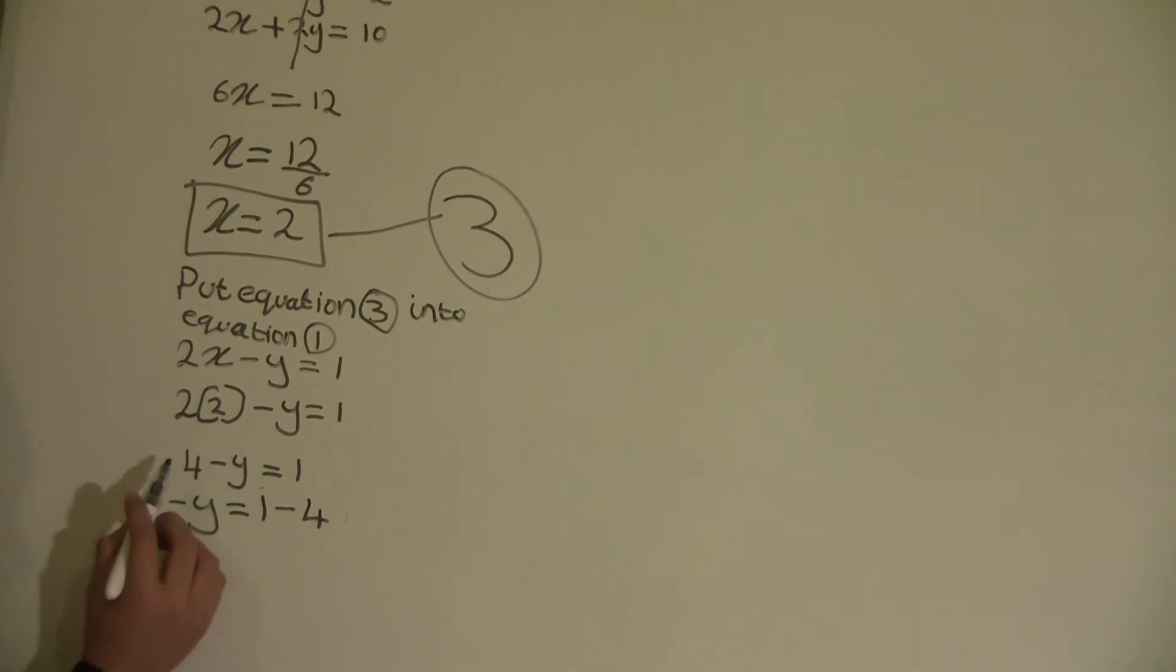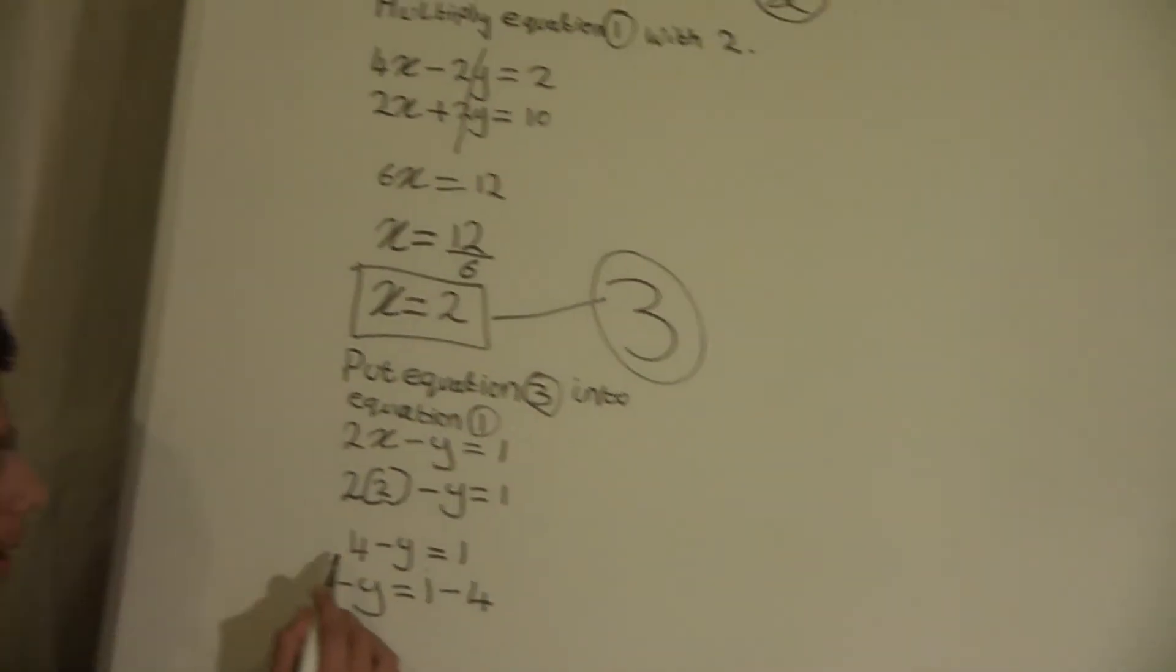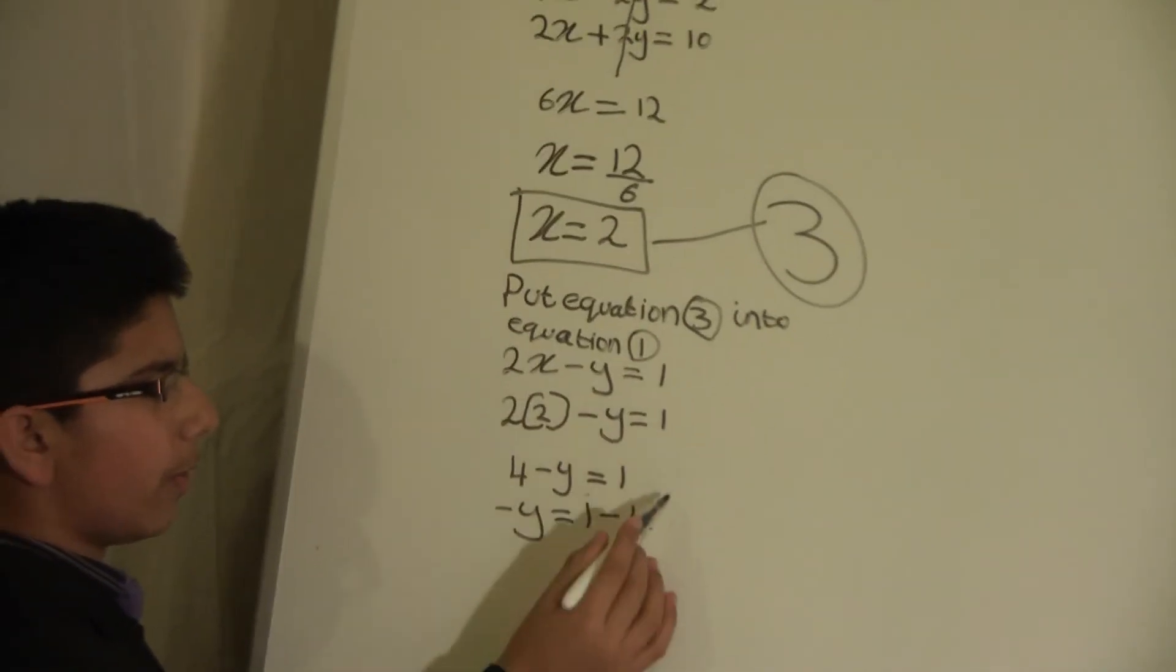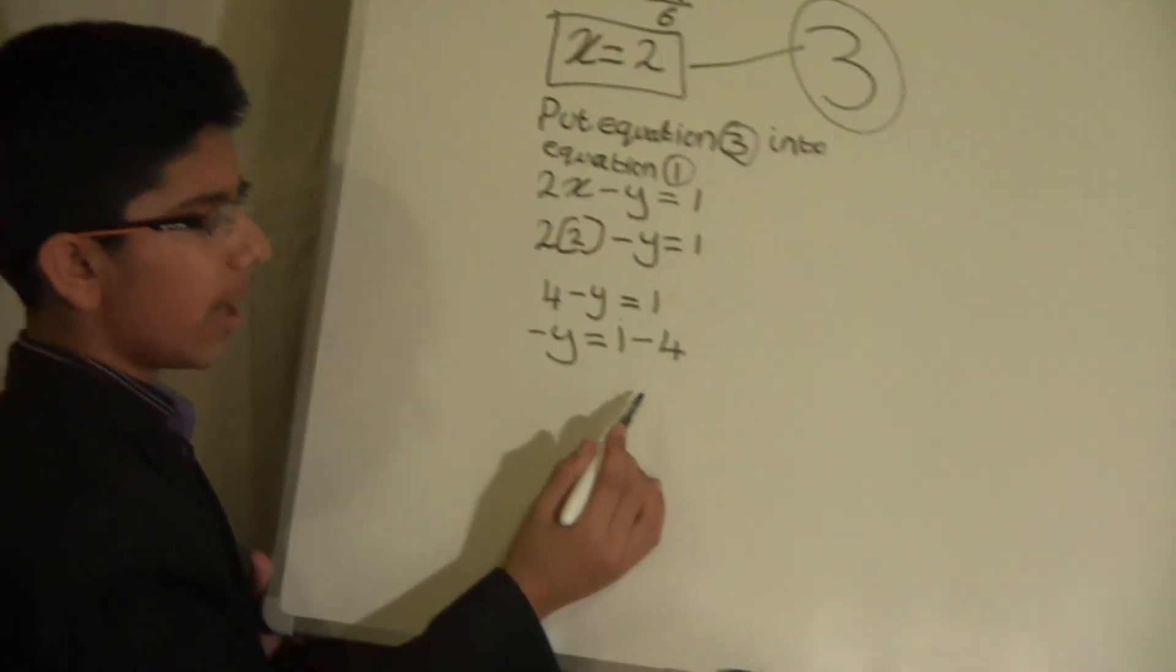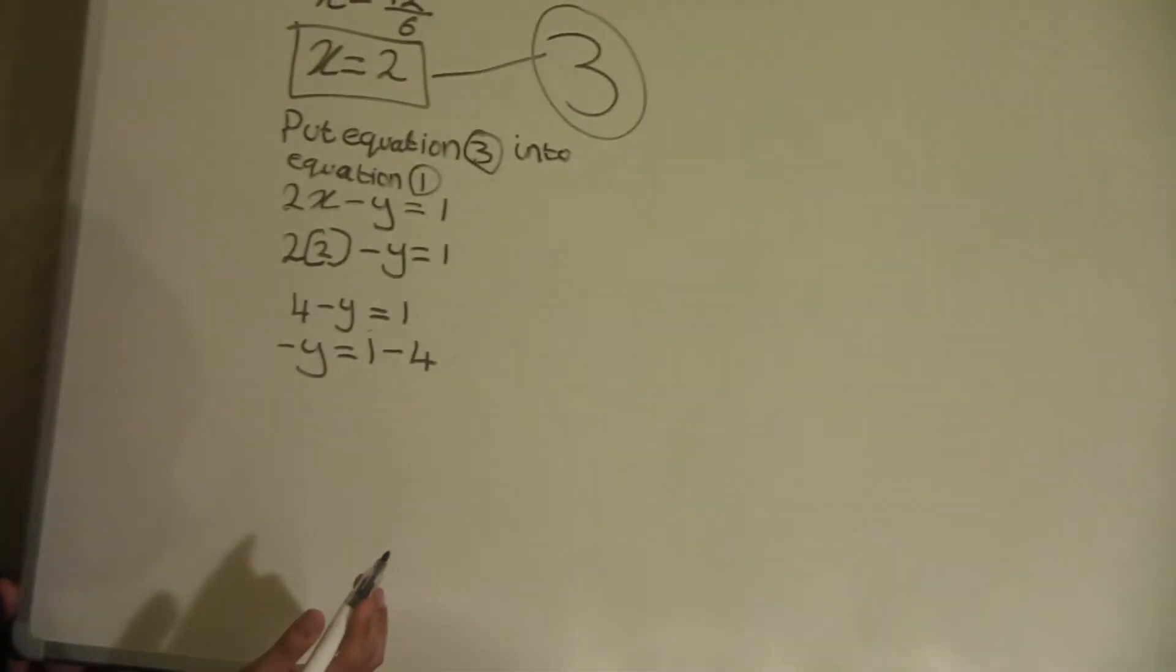So we will write minus y equals 1 minus 4. It will be minus because on this side it is a plus. So when we move it to the other side of the equals, it will become a minus, a negative number.